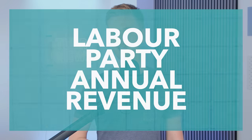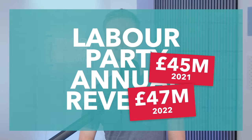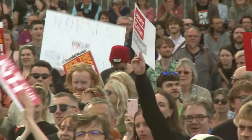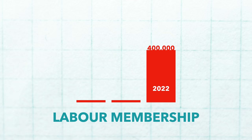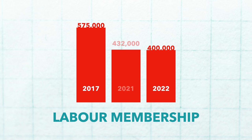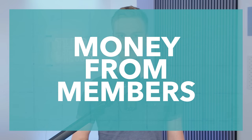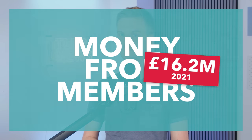Let's start with income. Last year, the Labour Party increased their revenue from £45 million in 2021 to over £47 million in 2022. Interestingly, Labour's membership actually declined in 2022, dropping to around 400,000. This is significantly down from the 2017 peak of about 575,000 in July 2017, and also down from 2021 when the party had 432,000 members. This is accounted for in the party's finances, which records a decline in income from party memberships. In 2021, Labour received about £16.2 million from membership fees; in 2022, this had declined to about £16 million.